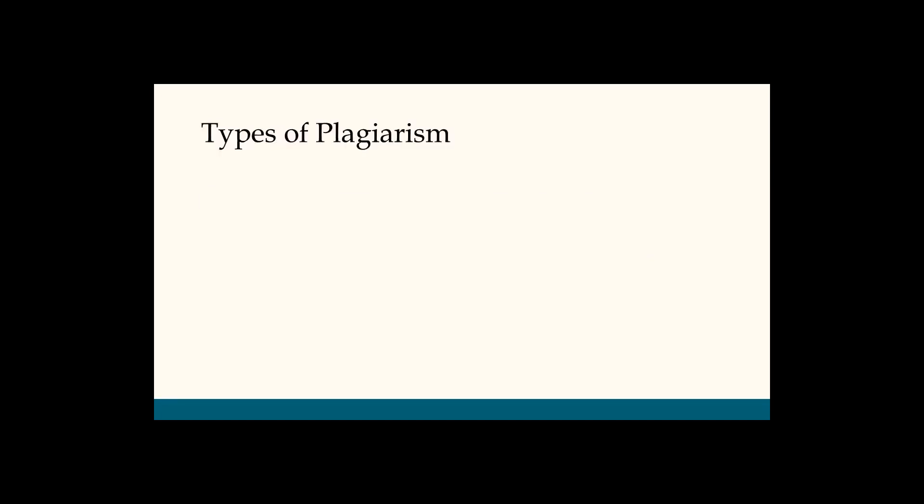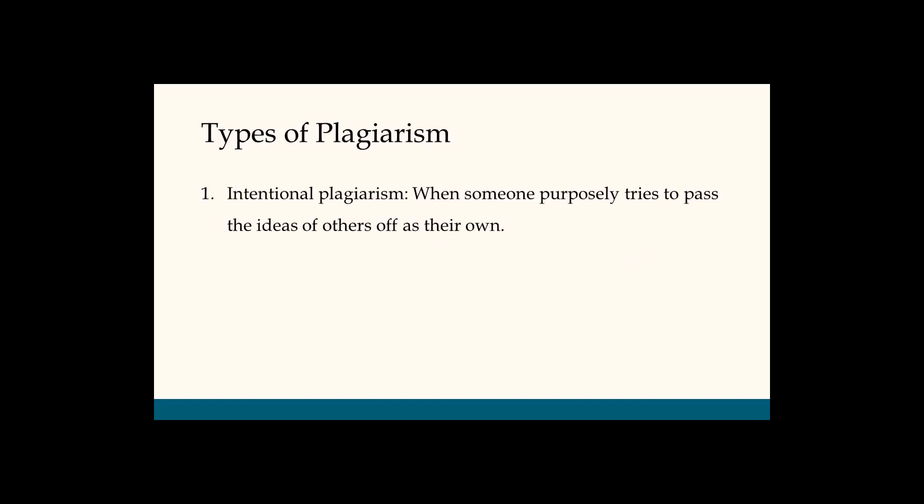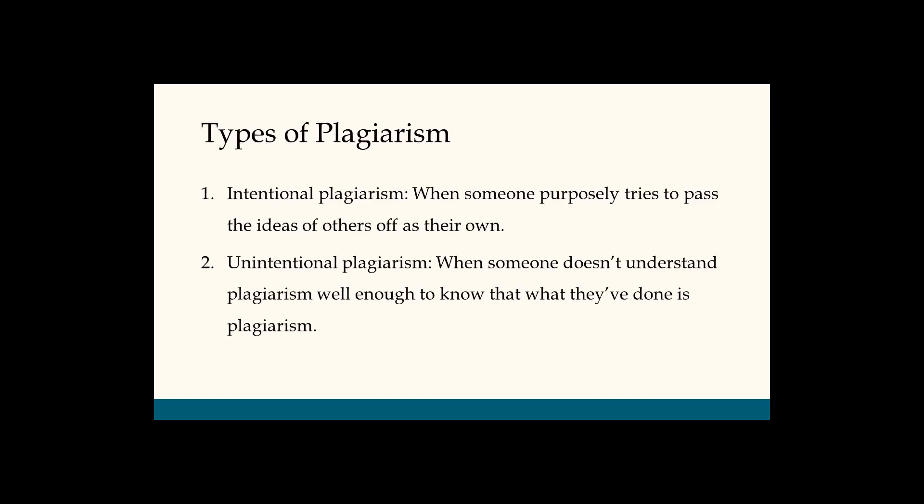There are two types of plagiarism. The first, intentional plagiarism, occurs when someone purposely tries to pass the ideas of others off as their own. And the second, unintentional plagiarism, occurs when someone doesn't understand plagiarism well enough to know that what they've done is in fact plagiarism. Both intentional and unintentional plagiarism are wrong. Avoiding either type begins with knowing what plagiarism is and ends with always remembering to cite your sources.